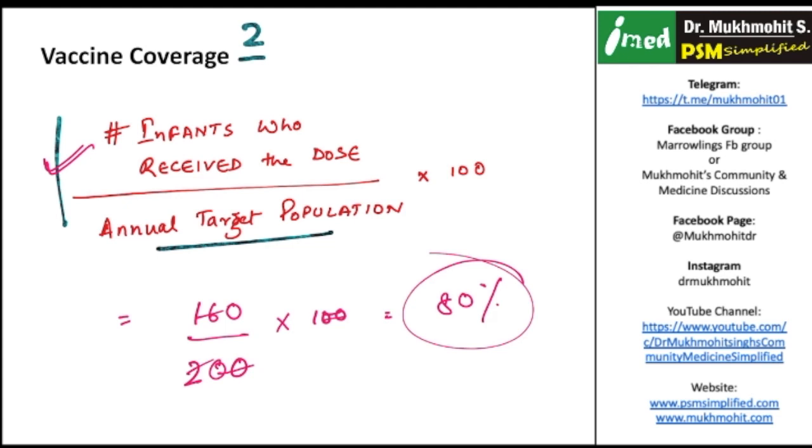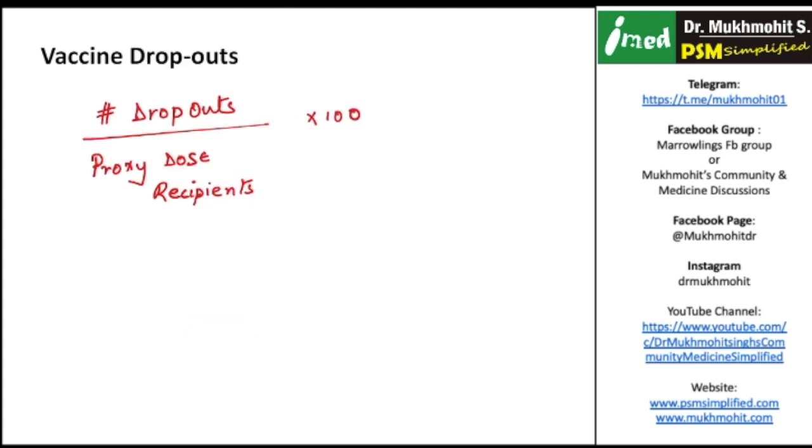Next, point number three: how to find out the dropouts? Dropouts are interesting. The simple formula is that you find out the total number of dropouts divided by the proxy dose recipients into 100. Simple, but the point is what do we mean by a dropout?